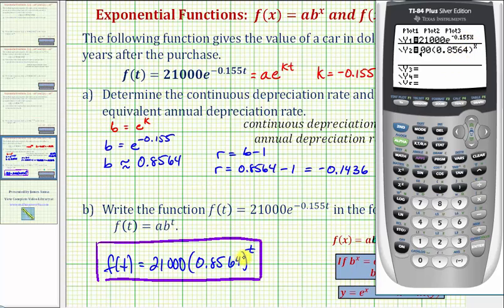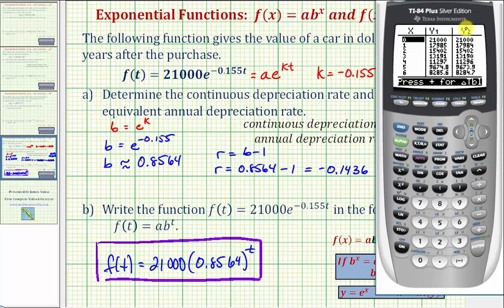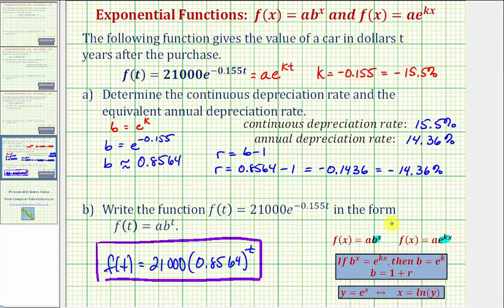We should be aware that because we rounded the value of b, there might be a slight difference between y1 and y2, but they should be extremely close. Pressing second graph to view the table, we can see y1 and y2 are almost exactly the same values. As x increases there's a slight difference due to rounding, but this table is enough to verify that the two functions are essentially equivalent. I hope you found this helpful.